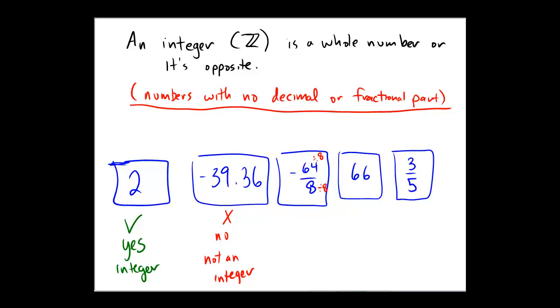So negative 64 over 8 is the same number as negative 8, and this number is, check mark, yes an integer. So even if the number is written in a fraction form, a number may still be an integer after simplification.